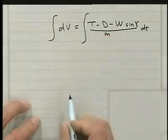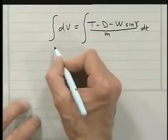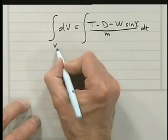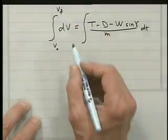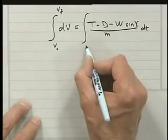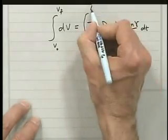Now we can put integral signs on both sides. Here we start from the initial velocity, I'll call it v0, to the final velocity vf, and here we start from the initial time t0 to the final time.